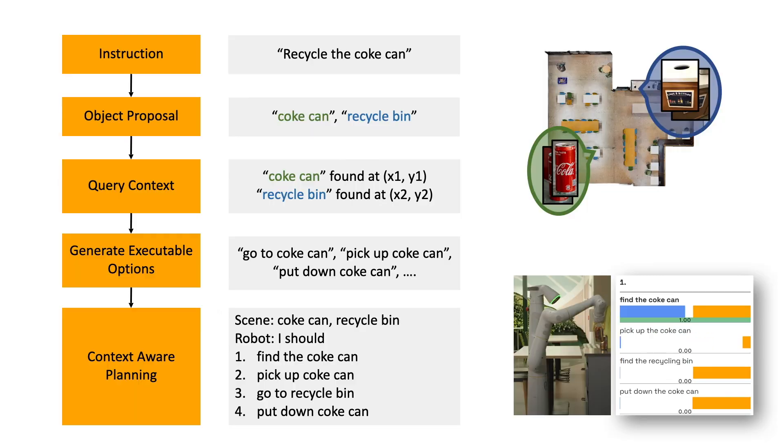When a human gives an instruction, a large language model parses the instruction into a list of related objects. We then query the scene representation for availability and locations of these objects.